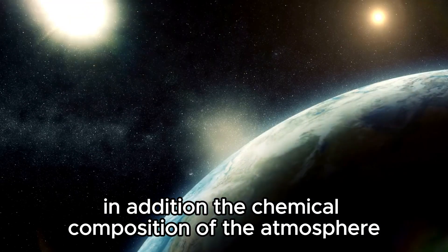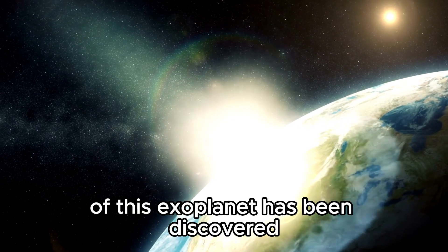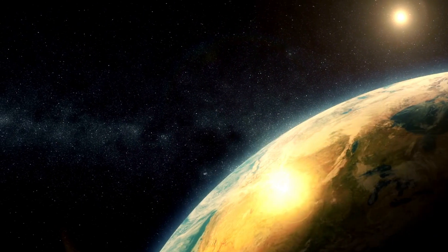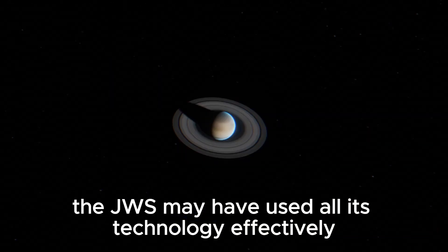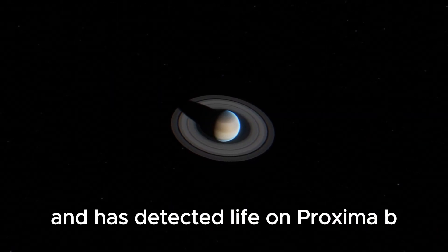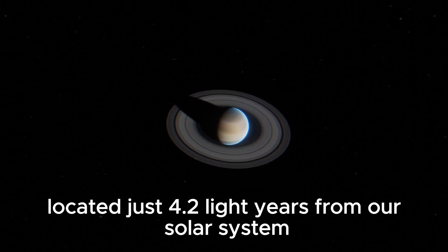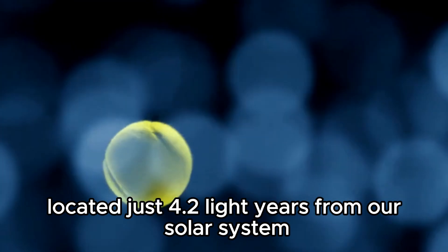In addition, the chemical composition of the atmosphere of this exoplanet has been discovered. According to NASA's director, the JWST may have used all its technology effectively and has detected life on Proxima b, an exoplanet located just 4.2 light-years from our solar system.